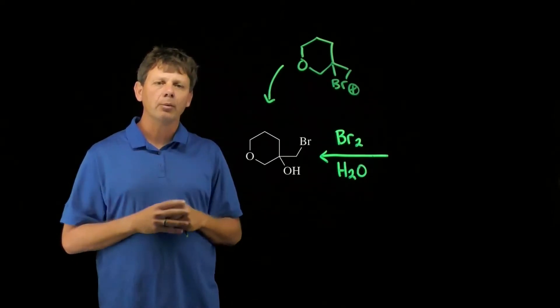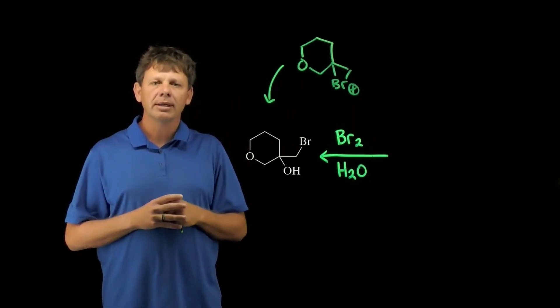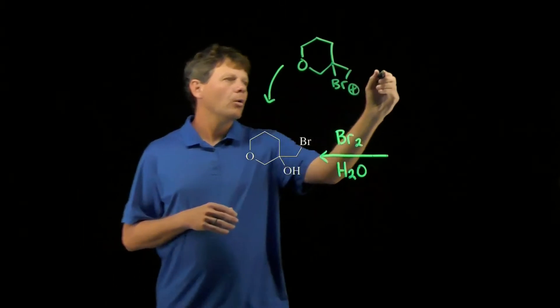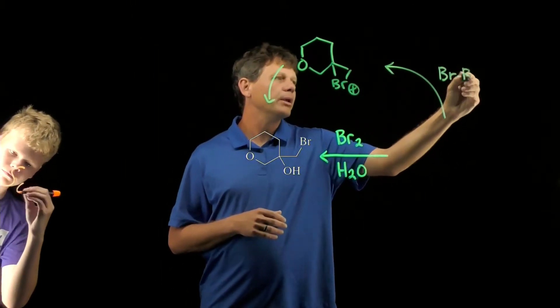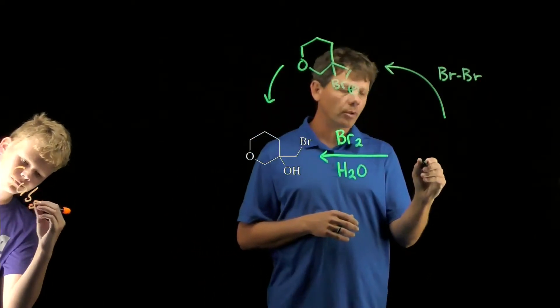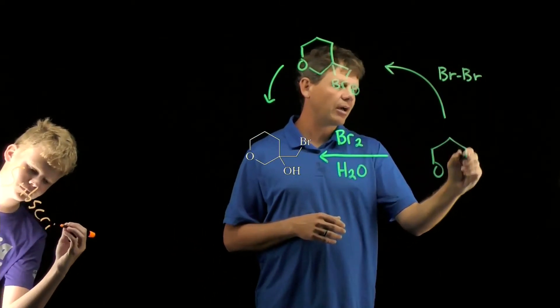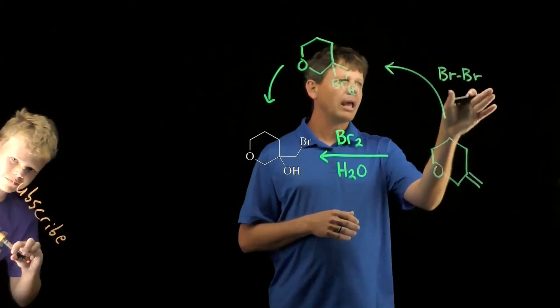We can work backwards one more step to say, where are we going to get that bromonium from? Well, that's where the reaction is going to start with the alkene, so Br2 is specifically going to react with this alkene.